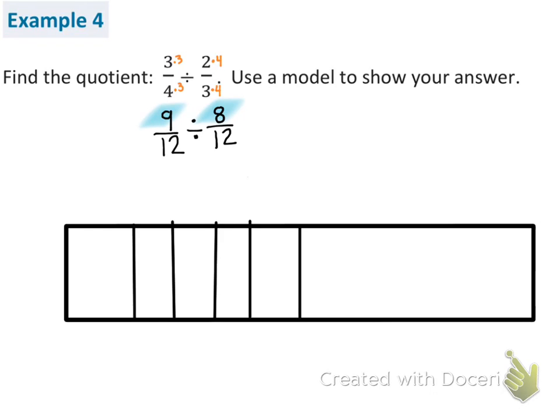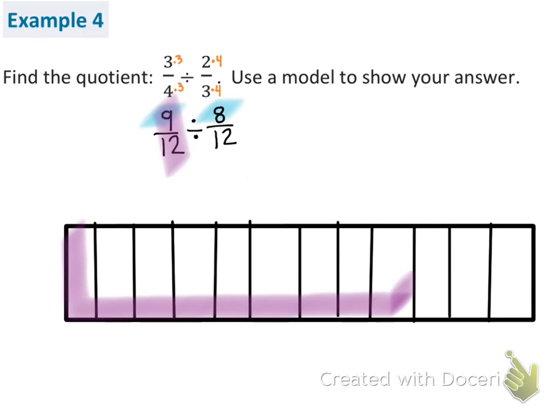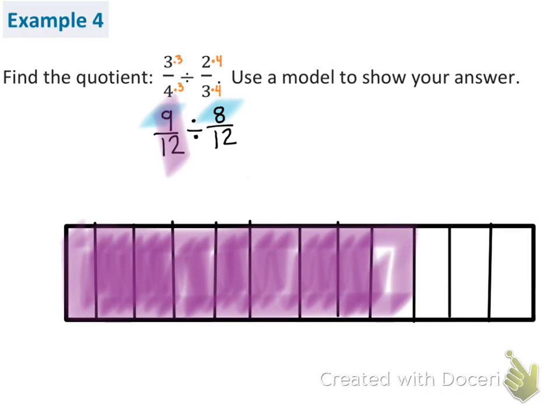I'm going to start by doing a fraction bar and partitioning it into 12 equal parts. And I need to shade in 9 twelfths. So here is my 9 twelfths, and I need to label the 9 twelfths. And each unit has a value of 1 twelfth, right?